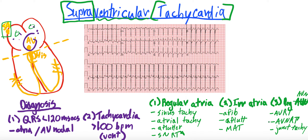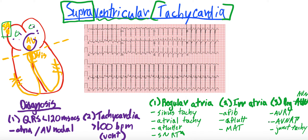The last thing I wanted to talk about in relation to supraventricular tachycardias was the general management. This is going to be slightly different depending on what the exact rhythm is and what the exact cause of the atrial tachycardia is. We divide management up into: is the patient stable or unstable? If you have an unstable patient — they're hypotensive, they're having ischemic chest pain, they're in respiratory distress — you're going to do synchronized cardioversion, starting at 50 joules.